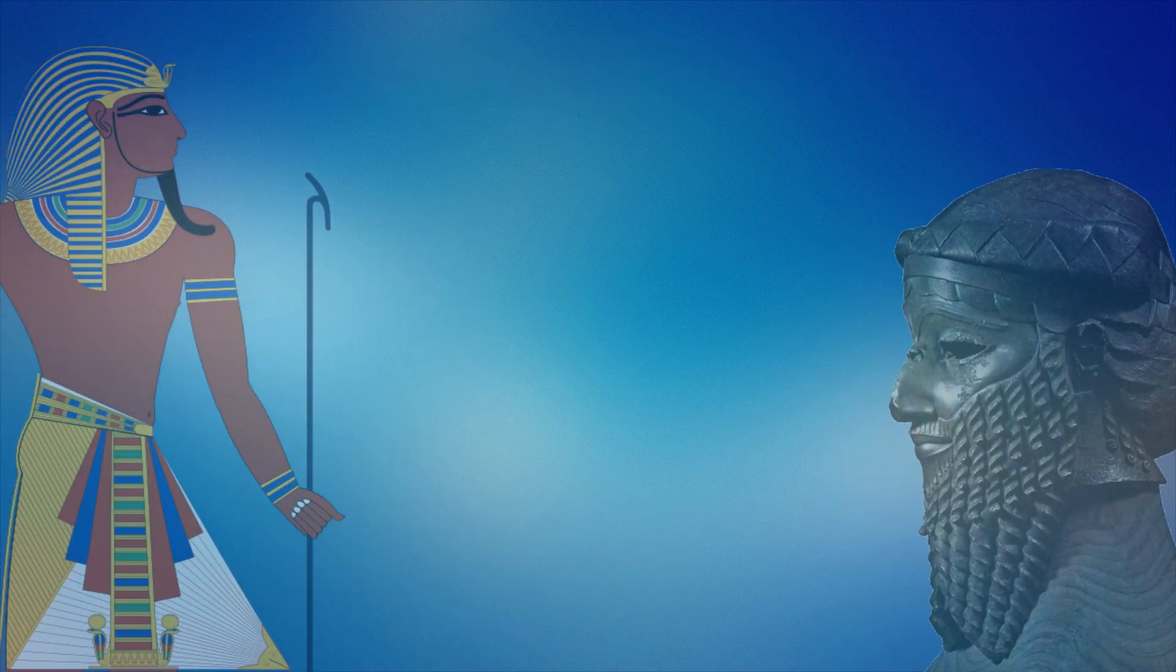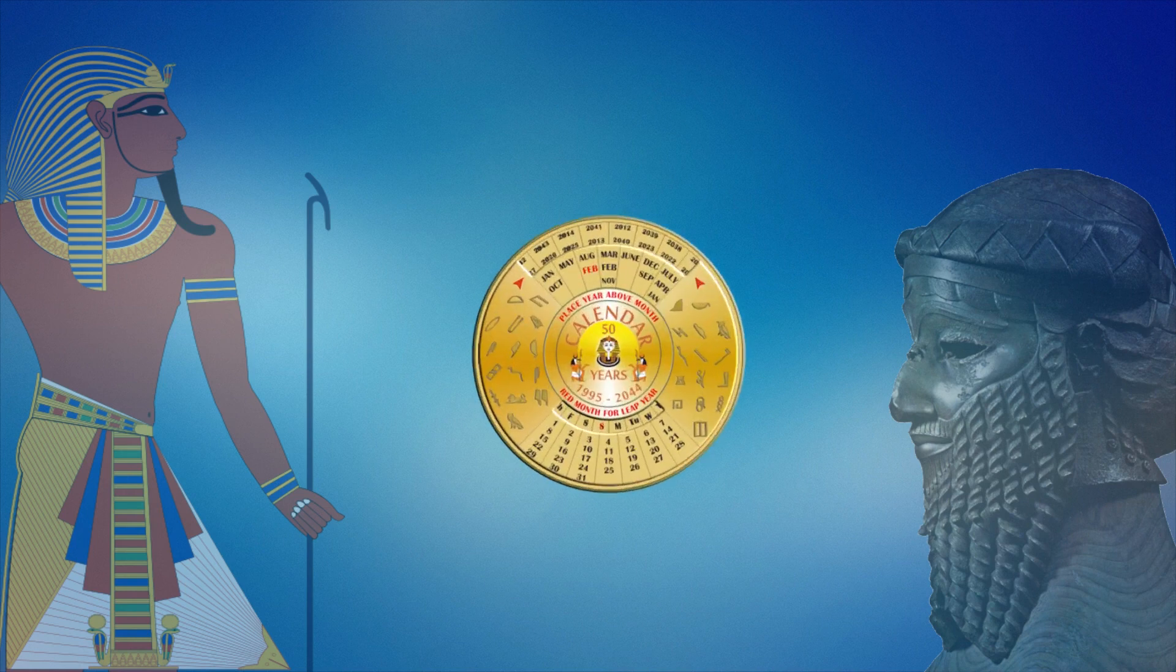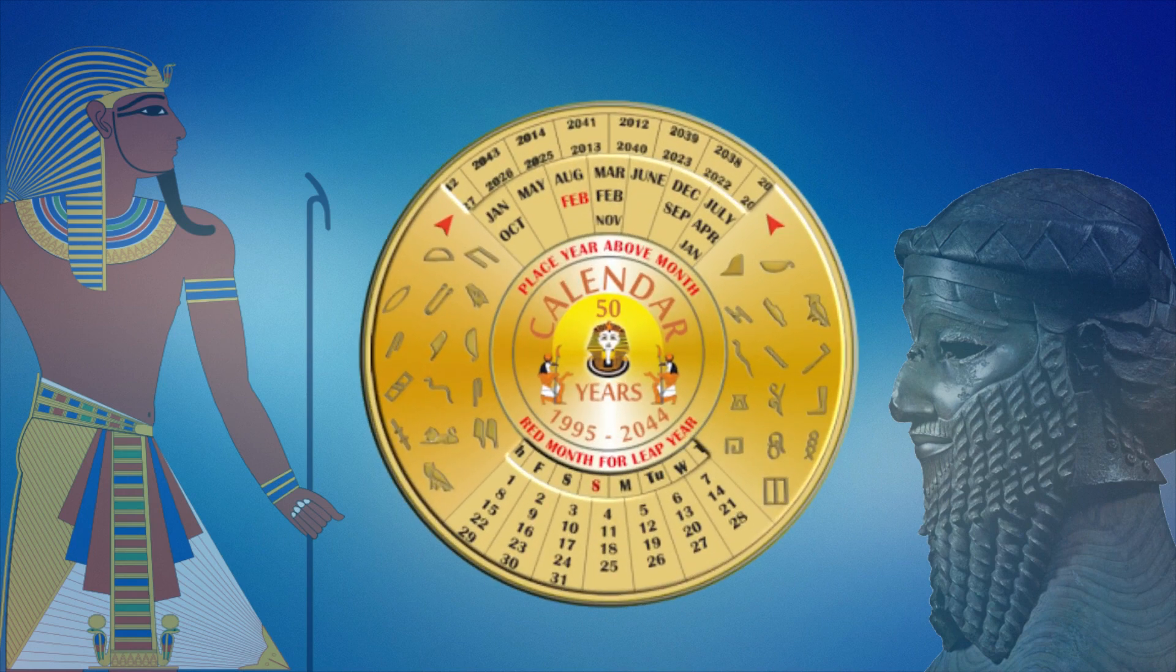One final achievement worth mentioning in applied mathematics by the ancient Egyptian and Babylonian civilization are the invention of official calendars consisting of 12 months of 30 days, plus an additional 5 days at the end of the year.